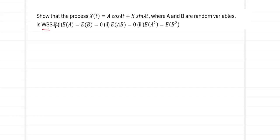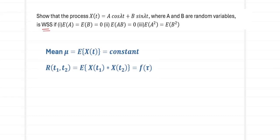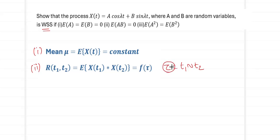Our prime target is to show that this is a Wide Sense Stationary (WSS) process. Recollecting the conditions required: the first condition is that the mean E[x(t)] must be a constant. The second condition is that the autocorrelation, defined as E[x(t1)·x(t2)], must be a function of tau only, where tau = t1 - t2. If both conditions are satisfied, we can claim the process is WSS.